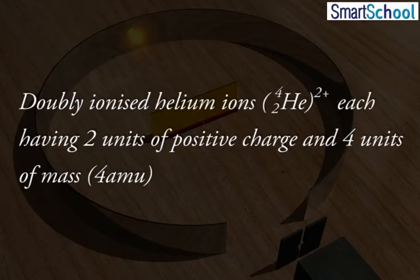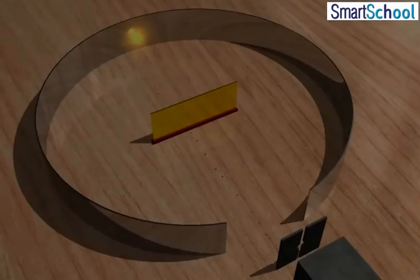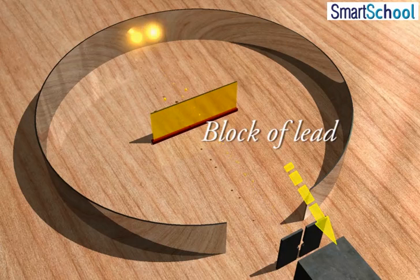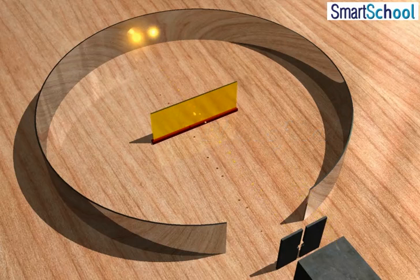These were obtained from radium placed in the cavity of a block of lead and made into a fine beam with a slit.